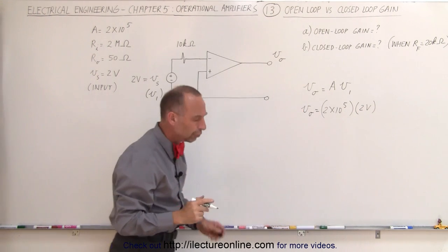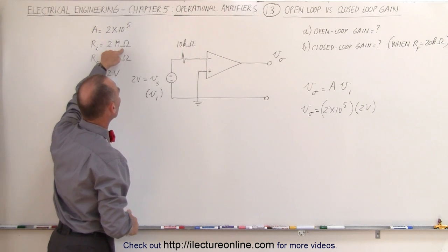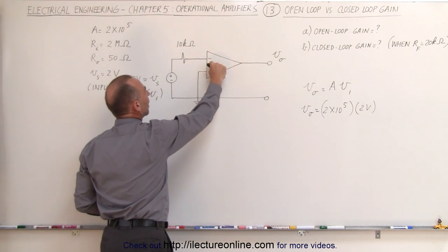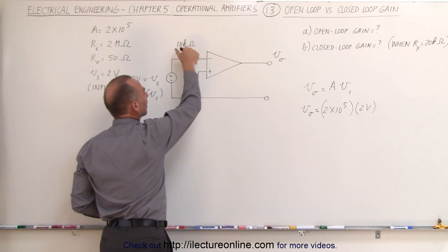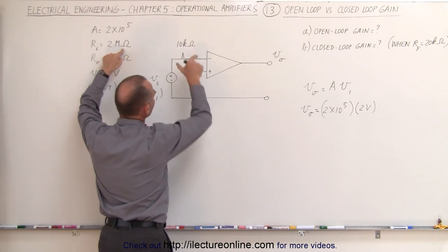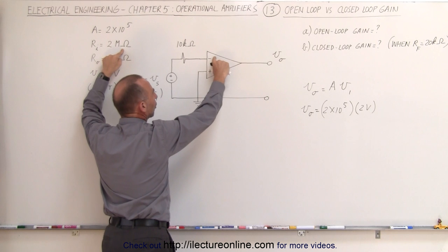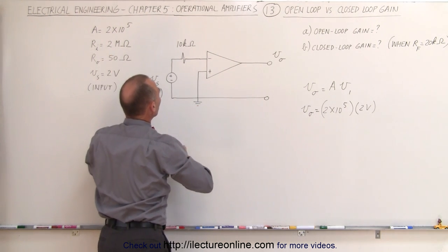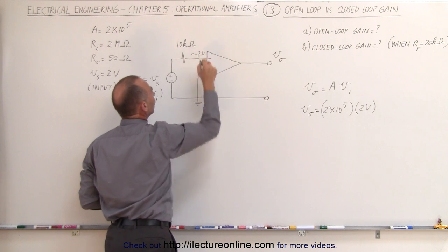Now why can we use the whole 2 volts? Well it tells us here that the input resistance is 2 mega ohms and that would be the resistance right here and we have a 10k ohm resistor over here. The 10k ohm resistor is so much smaller than the 2 mega ohm resistor that almost no voltage drops across this resistor and almost all of the voltage drops across here which means that the voltage at this location is still approximately equal to 2 volts.